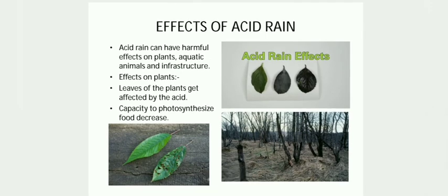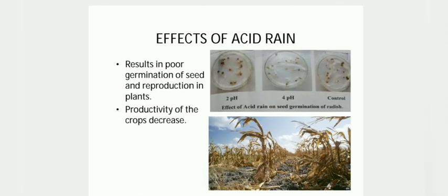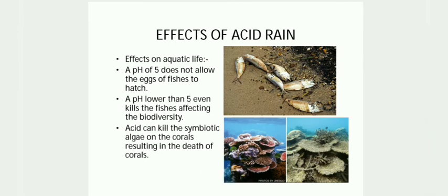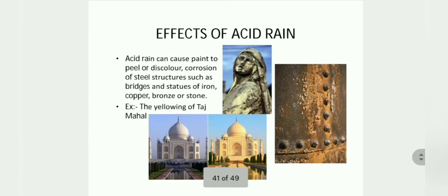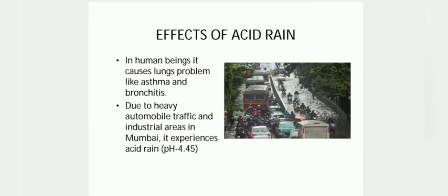Acid rain can burn the leaves of plants and affects photosynthesis. It can also result in poor germination of seeds. Acid water can kill fishes, coral reefs, and affects biodiversity. It can also decrease soil fertility and soil nutrients. Acid rain can cause corrosion of structures made up of metals like iron and copper. It is also responsible for the yellowing of the Taj Mahal. Mumbai experiences acid rain of pH 4.45.